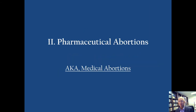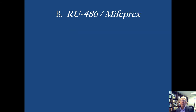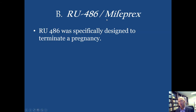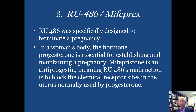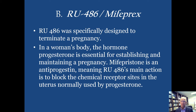Let's talk about pharmaceutical abortions, also known as medical abortions — you will see this term all over the Internet. I prefer the term pharmaceutical. Usually what we are talking about is a drug that goes under the brand name Mifeprex. Its technical name is RU486, and it was specifically designed to end a pregnancy. In the woman's body, the hormone progesterone is essential for establishing and maintaining a pregnancy. Mifeprex is an antiprogestin, meaning its main action is to block the chemical receptor sites in the uterus normally used by progesterone. By doing so, it ends the pregnancy and the baby dies.